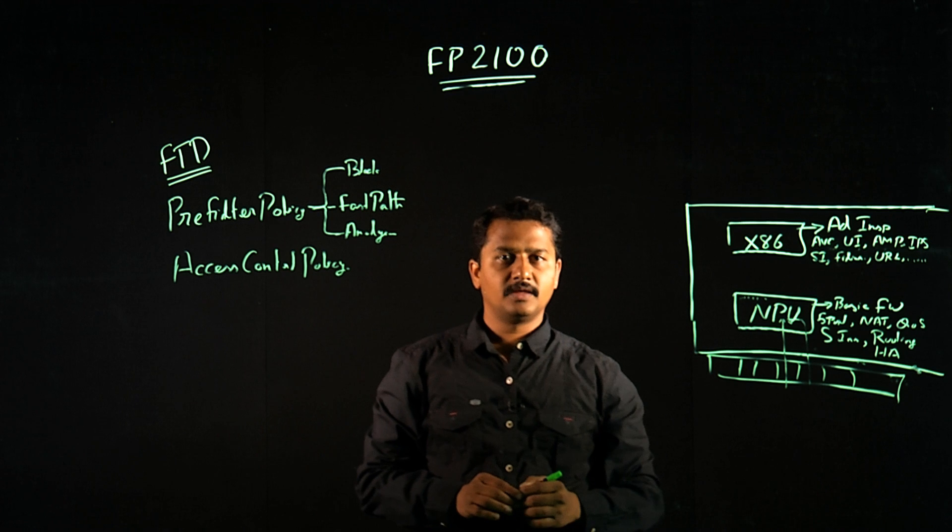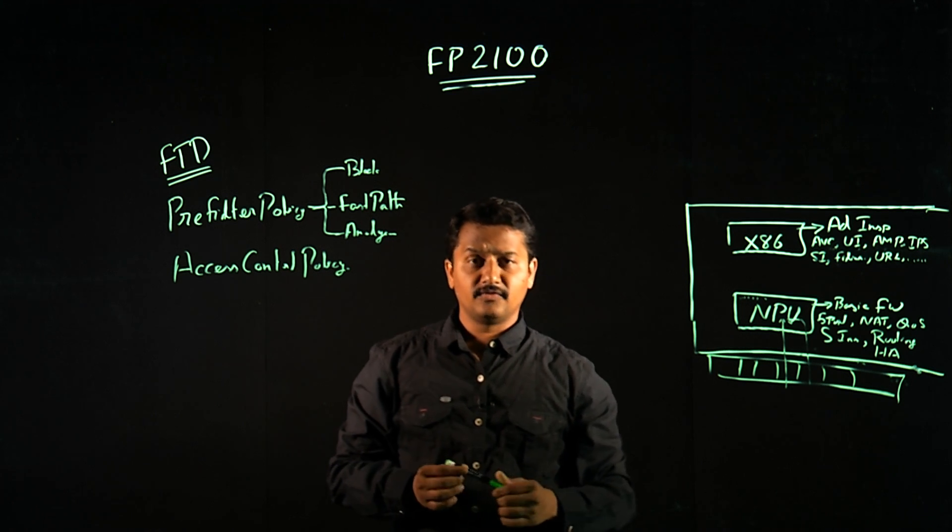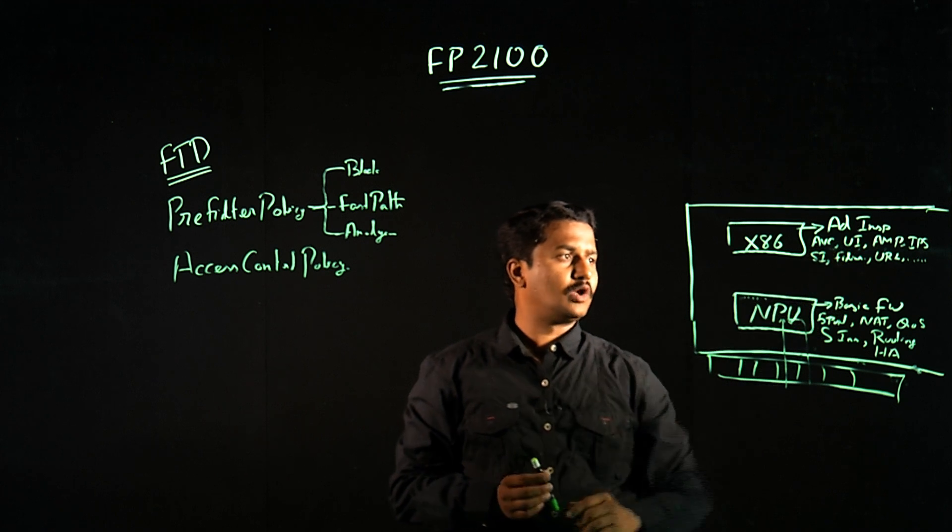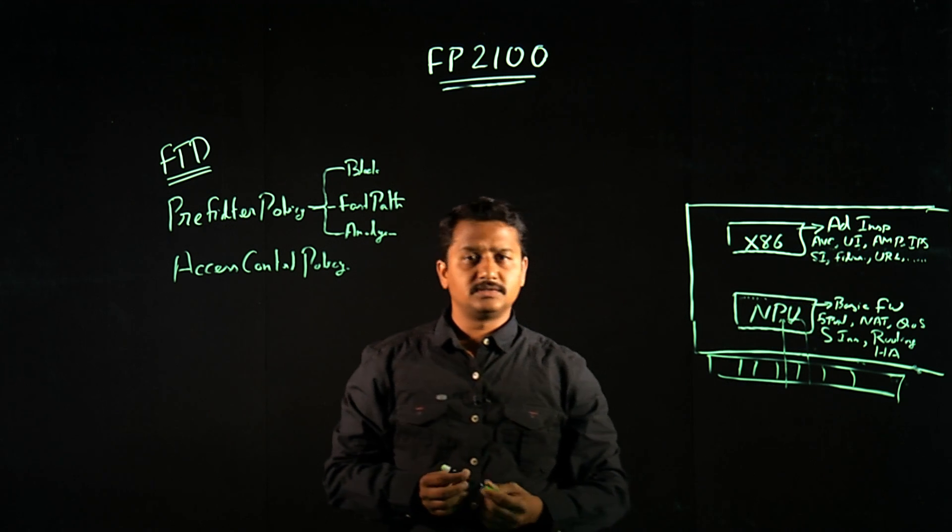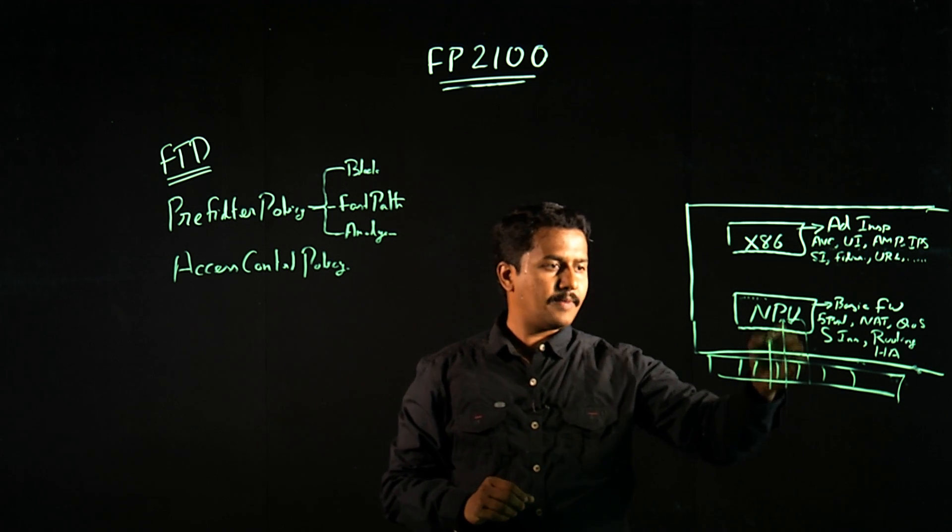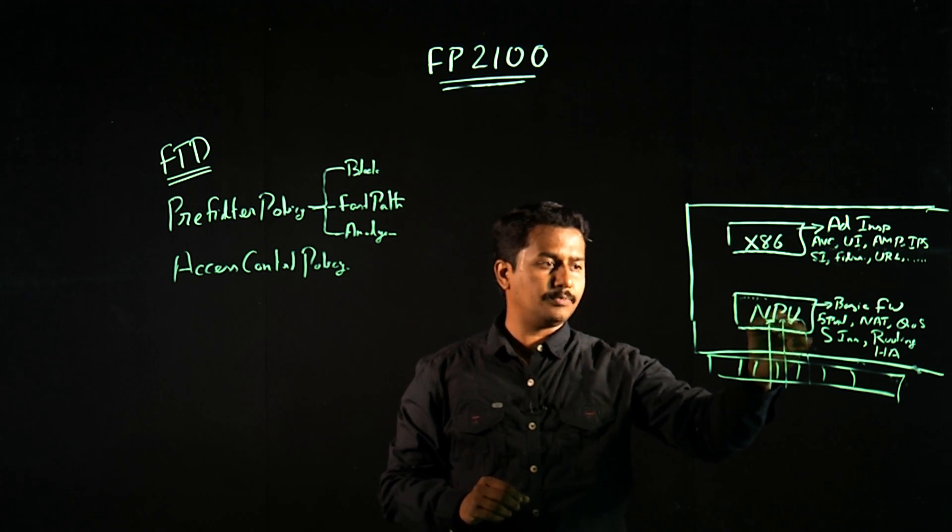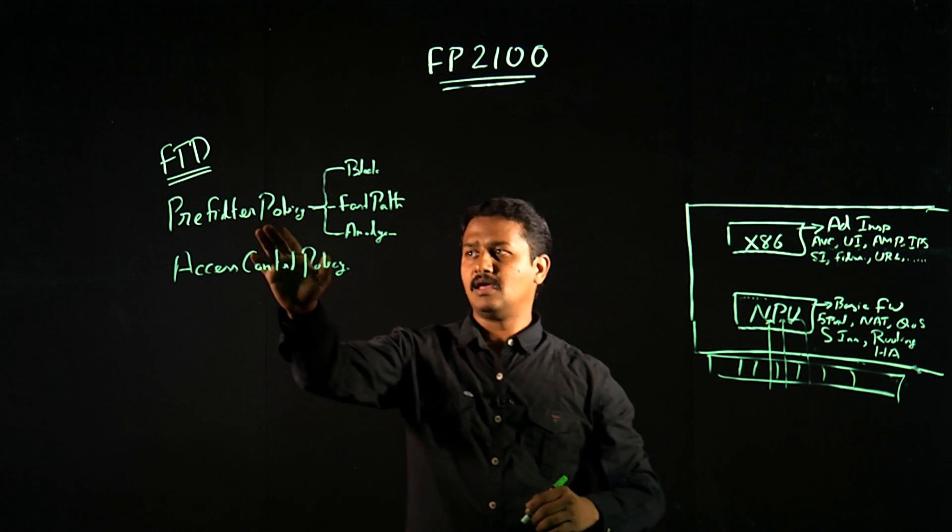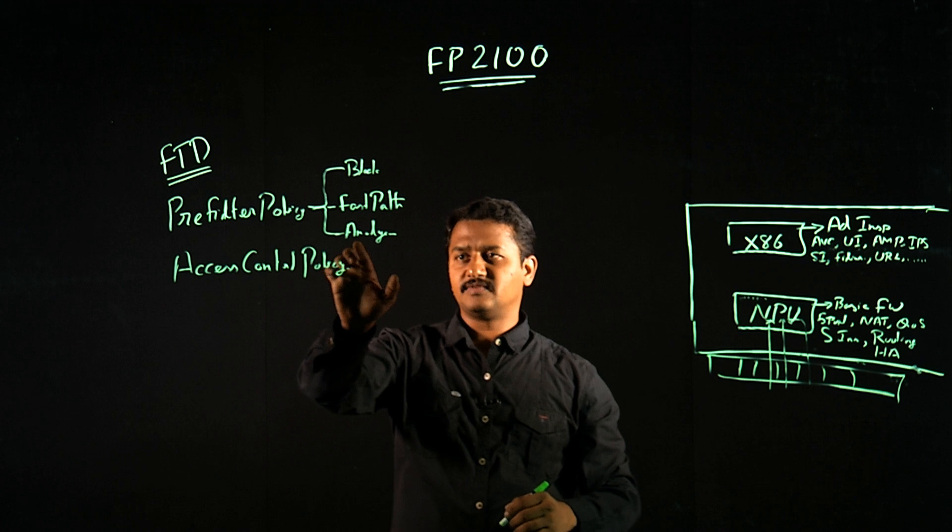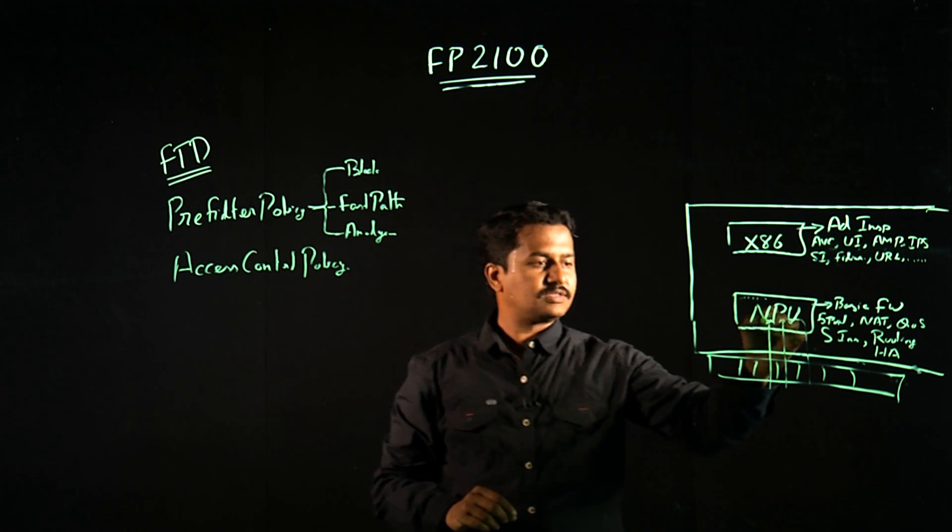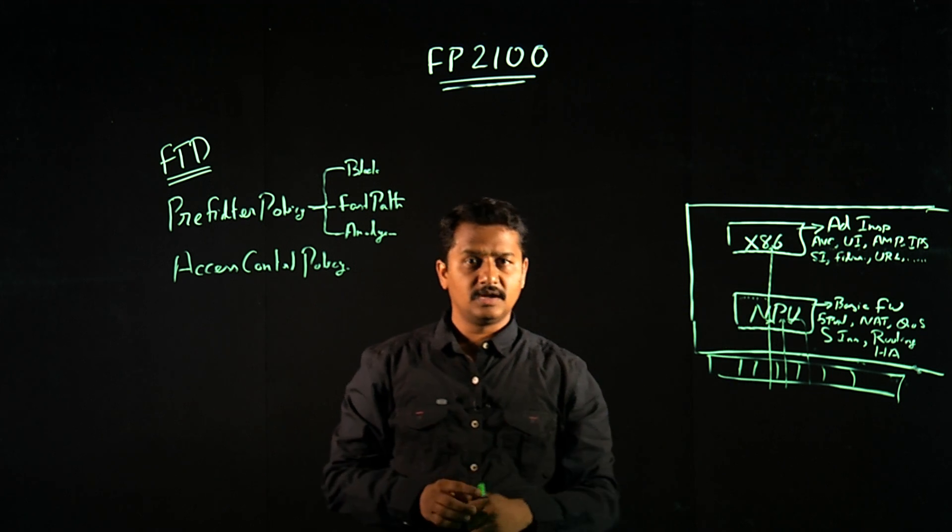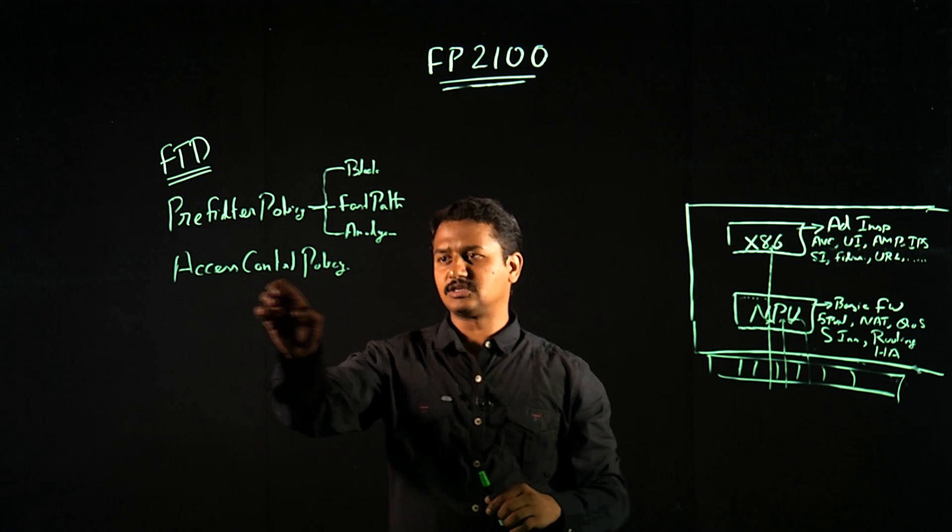That happens at NPU level. But for most of the traffic which you need advanced inspection such as AVC, URL filtering or AMP, IPS, you could create an access control policy. If there is a traffic that matches the NPU, NPU checks the policy against pre-filter. If it either does not match any of the pre-filter policy or matches with the action analyzed, those traffic are sent to the x86. Once the x86 takes the packet and checks against the access control policy.